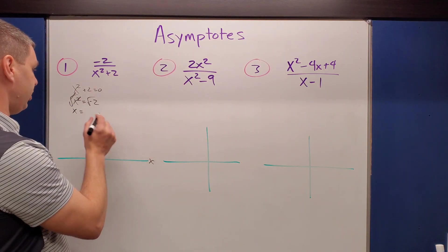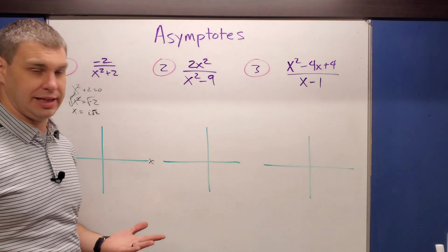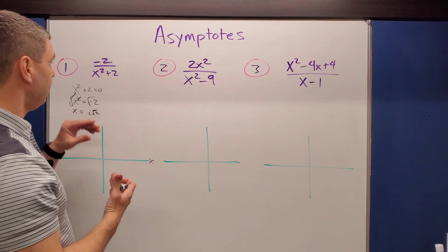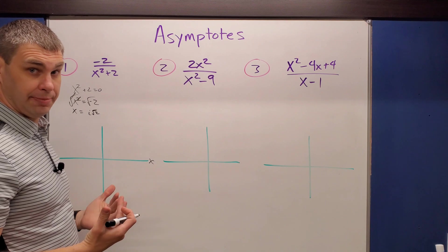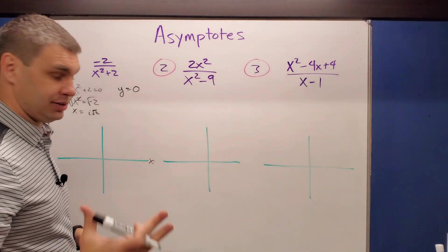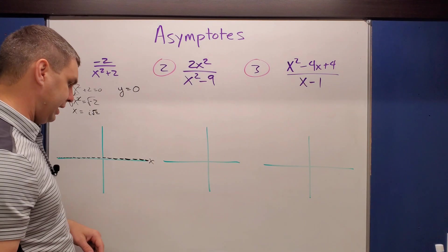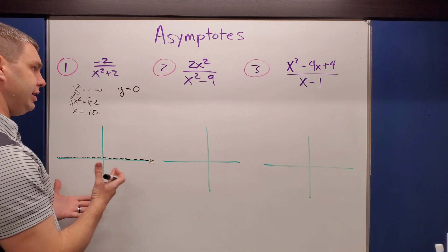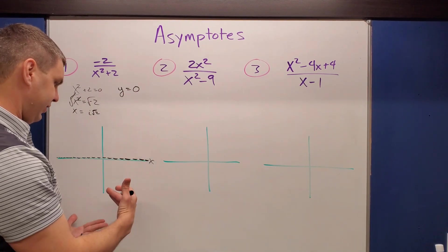There are no vertical asymptotes. For horizontal asymptotes: the bottom has the larger degree, which means the horizontal asymptote is the line y equals zero. I like to indicate asymptotes with a dotted line on the graph — you can add arrows if you want.